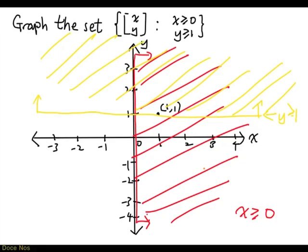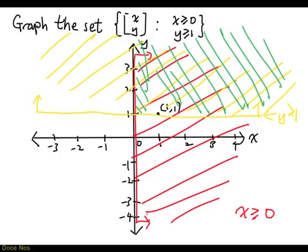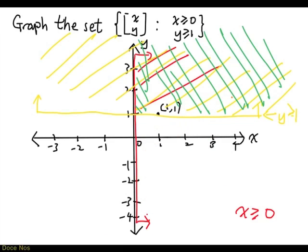We are interested in points that satisfy these two inequalities at the same time. So the picture we are looking for consists of all the points that are shaded green. And if you want to make this look nicer, you can just write down the two inequalities without all these red lines and just shade the green area.